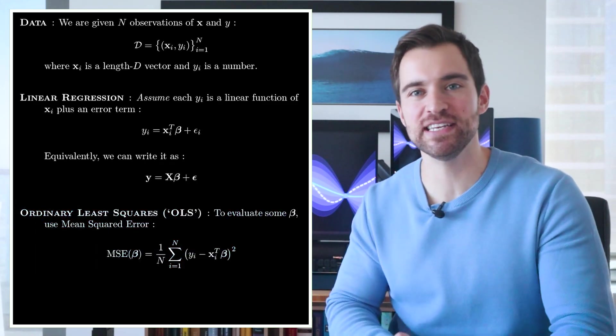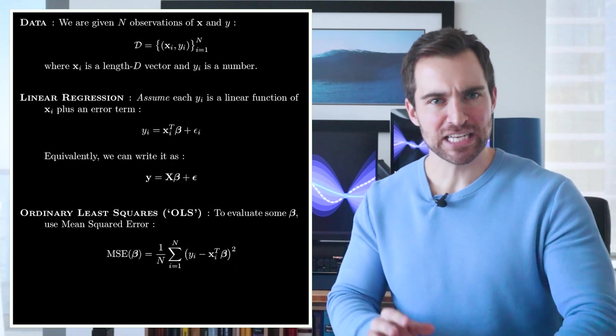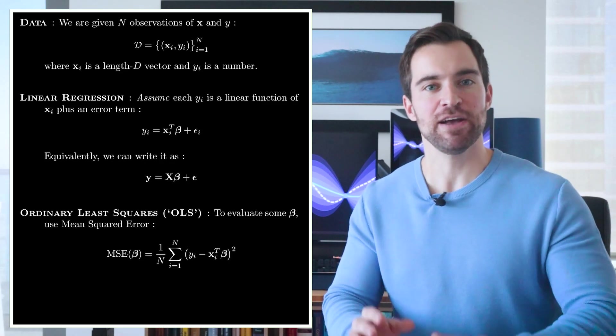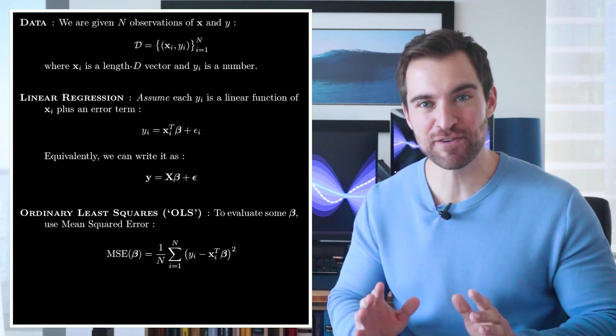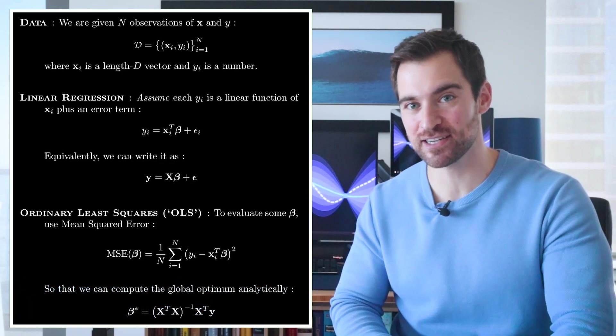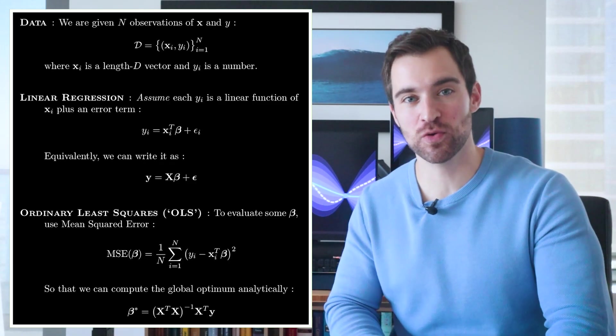Next, let's move on to ordinary least squares. OLS tells us how we should choose our coefficients from our data. Specifically, it says we should choose those that minimize the mean squared error. If we do so, then we have the enormously good fortune of being able to calculate, straight from our data, the globally optimal coefficients, which is given with this expression. Okay, now, I'd like to take a minute to make a few comments on this equation.